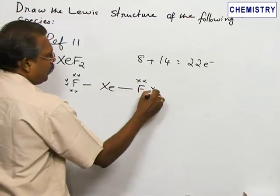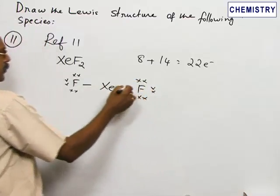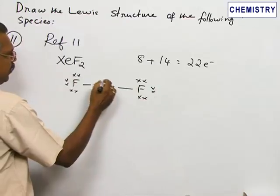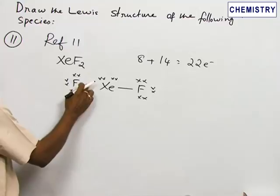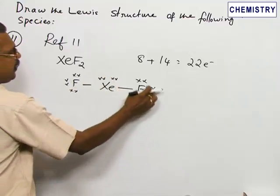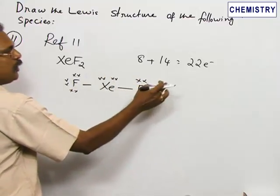Two, four, six - this fluorine also has an octet. Now xenon, if you allot two, four... we can count one, two, three, four, five, six, seven, eight, nine, ten - so ten times two, only 20 electrons are distributed.